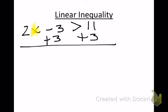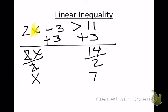11 plus 3 is 14. Bring down that 2x. In order to cancel out that 2, because it's multiplication, you are going to divide by 2. That's going to leave you with an x. Divide this side by 2, and you've got a 7.